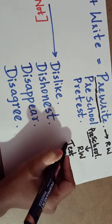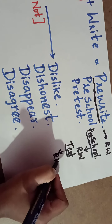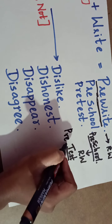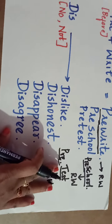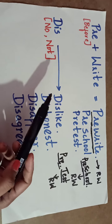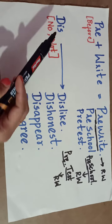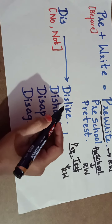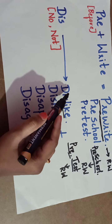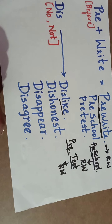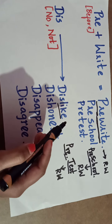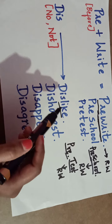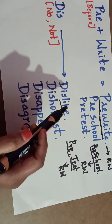Now let us look at the prefix 'dis'. 'Dis' means 'no' or 'not'. The root word is 'like'. You add the prefix 'dis', and the new word becomes 'dislike'.